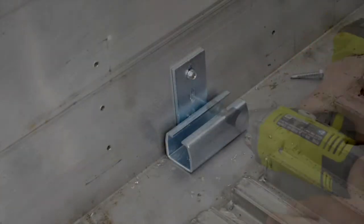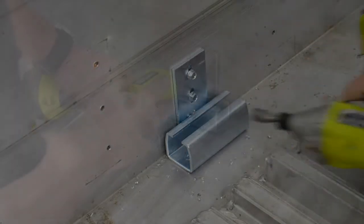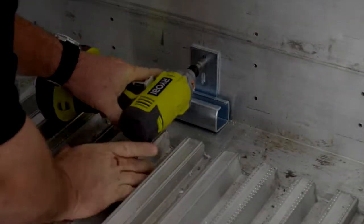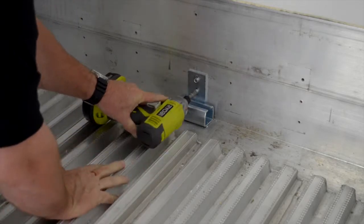Install the bulkhead support brackets on the front wall along the floor 35 inches out from the center line using two hex head screws included with the kit.